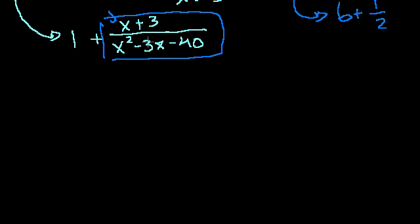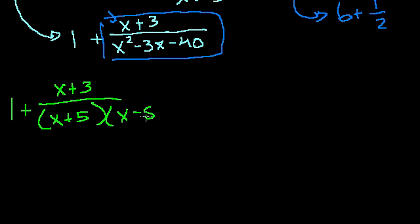So let's see, what two numbers add up to minus 3? And when you multiply them, you get minus 40. They have to be different signs, because when you multiply them, you get a negative, so it has to be minus 8 and plus 5. So we can rewrite this as 1 plus x plus 3 over x plus 5 times x minus 8. 5 times negative 8 is minus 40. Plus 5 minus 8 is minus 3.